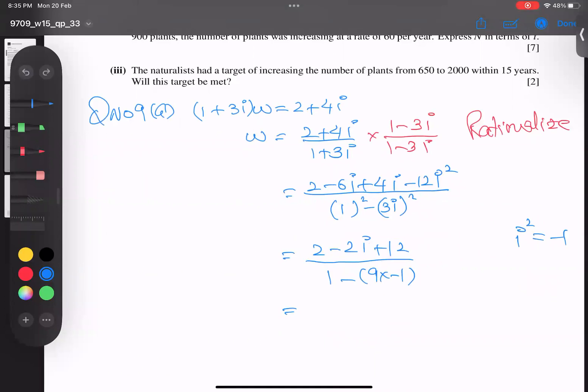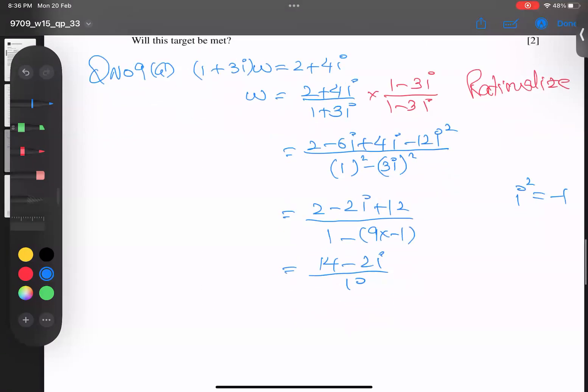So 12 + 2 = 14, minus 2i, divided by 10. Ultimately I get 14/10 = 7/5, and -2i/10 = -1/5 i. So w = 7/5 - i/5. Alhamdulillah, first part done.